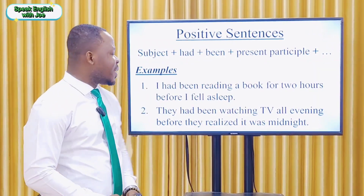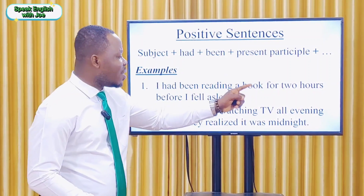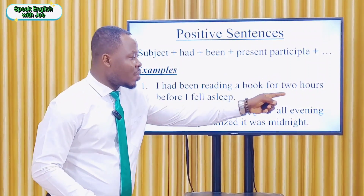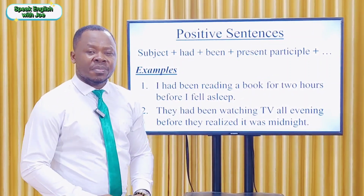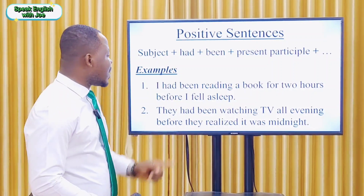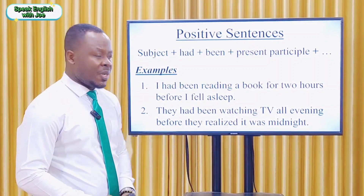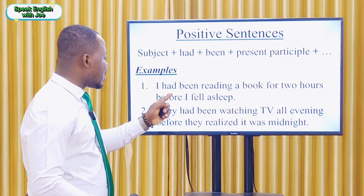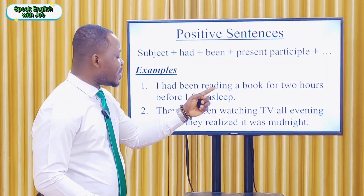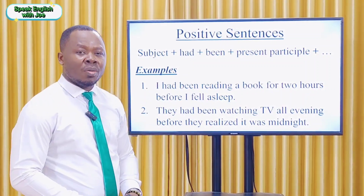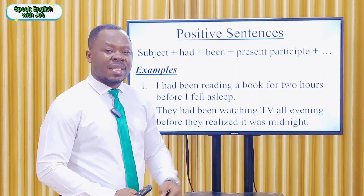Example one: 'I had been reading a book for two hours before I fell asleep.' In this sentence, the subject is 'I', plus the two helping verbs 'had' plus 'been', plus the main verb 'read' plus -ing (the present participle), plus the rest of the sentence.